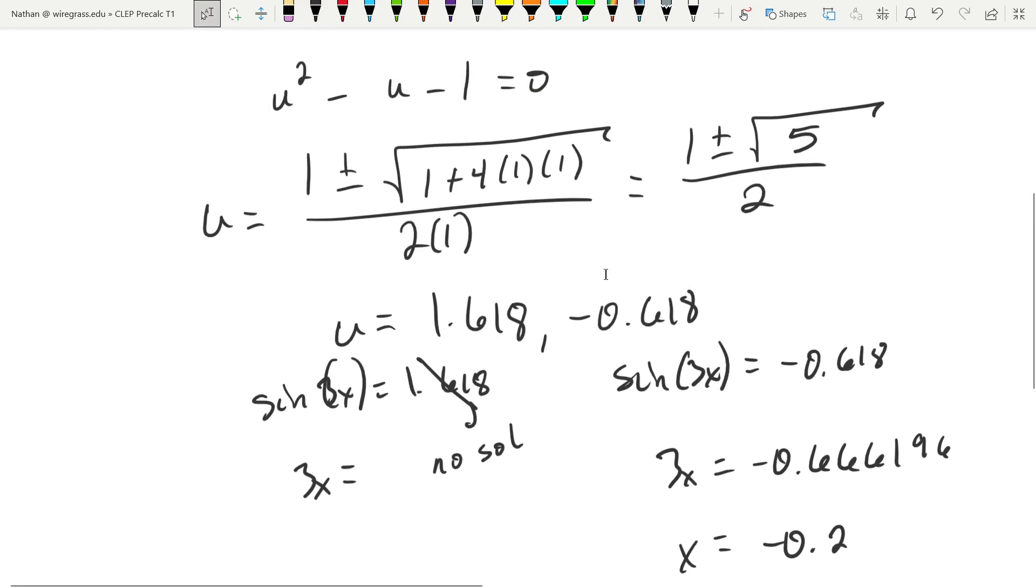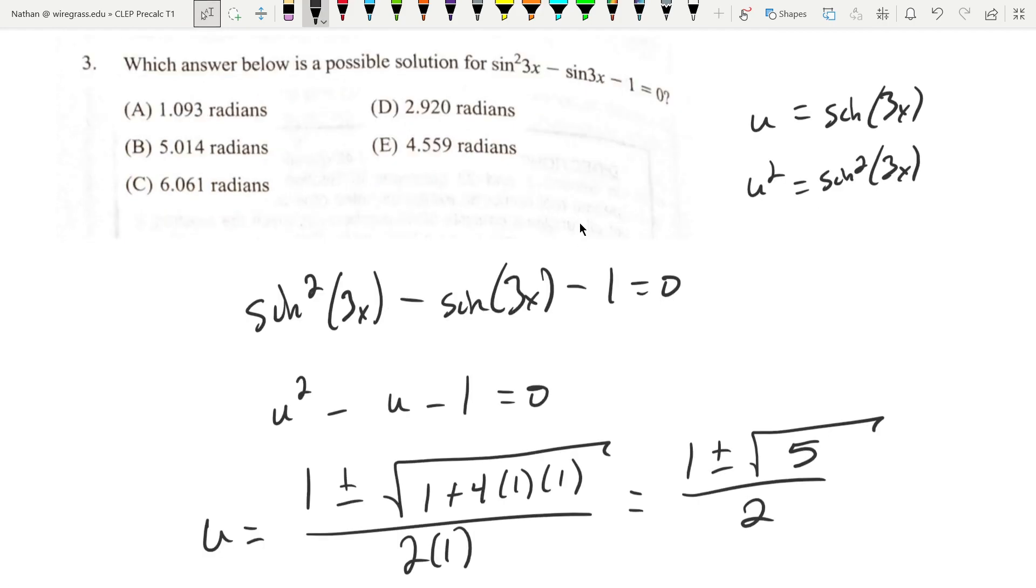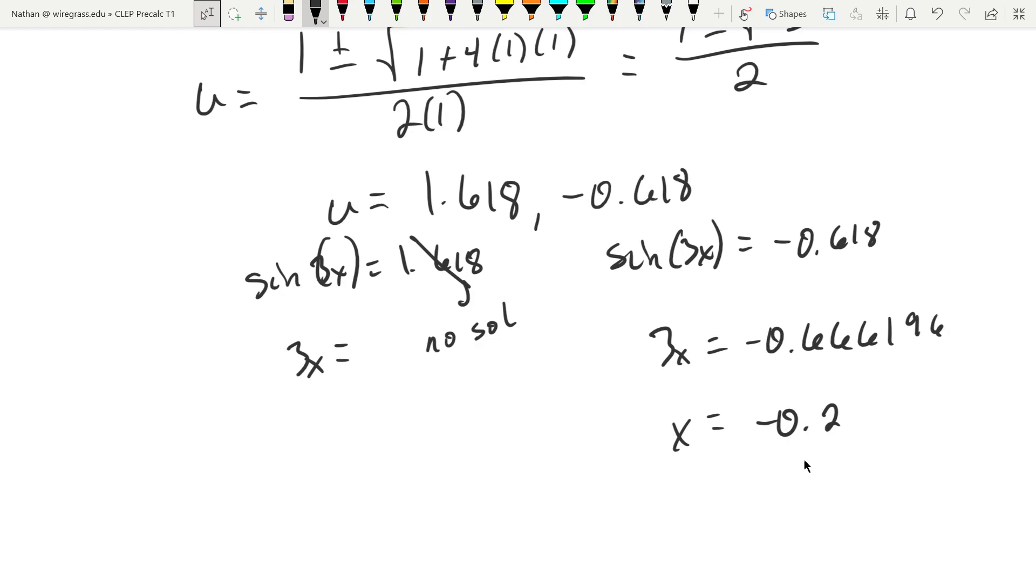I get negative 0.2 and some change. You'll notice that none of these answer choices match. That's because I have a negative radians answer. So all I have to do is add 2π to my answer, which will make it positive. I'm going to take this value and add 2π.